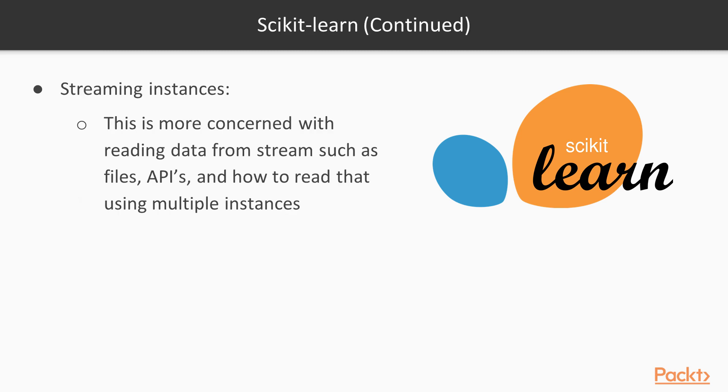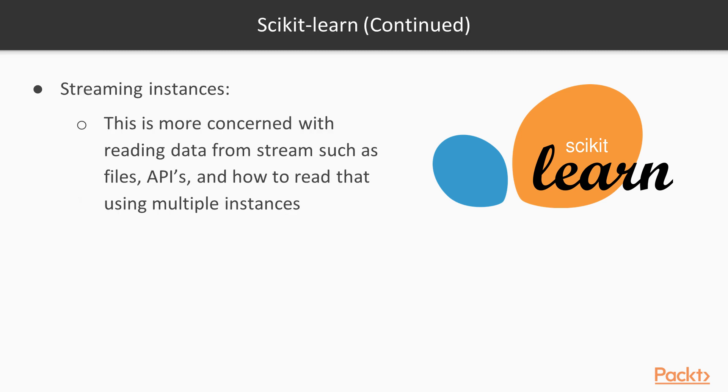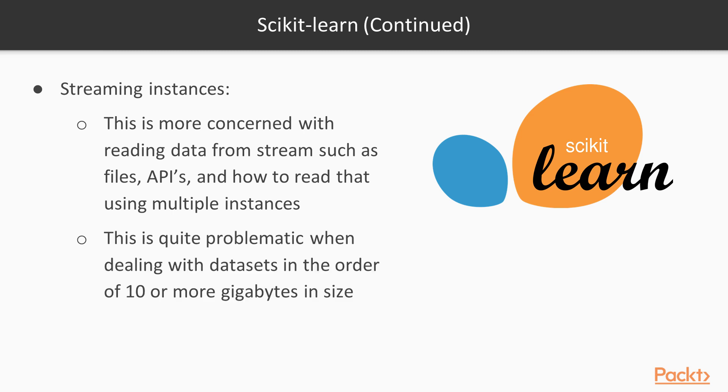First, let's talk about streaming instances. This is more concerned with reading data from streams, such as files, APIs, and how to read that using multiple instances. And this is quite problematic when dealing with datasets in order of 10 or more gigabytes in size. You will find that under the streaming instance part.